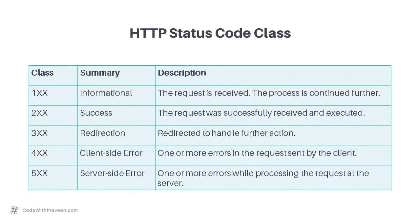This table summarizes the main categories of HTTP status codes, also called classes. They are categorized according to the type of HTTP status code they are going to return. For example, the first class, namely 1xx, which is the series that starts with 1, is primarily for informational status codes.